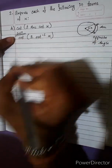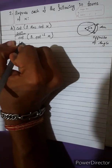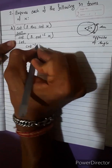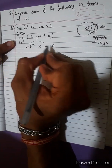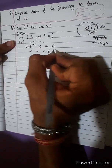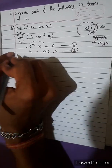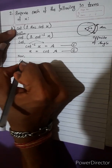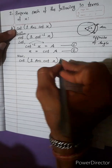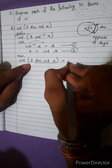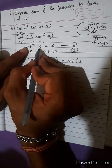Let cot inverse x equal to a. This is the setup. We are going to write cot 2 arc cot inverse x, which equals cot 2a.